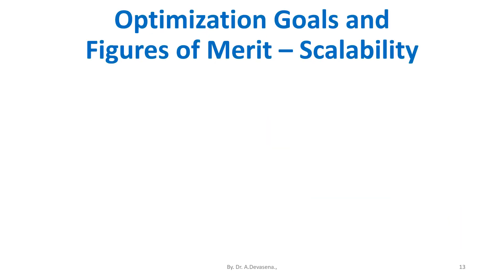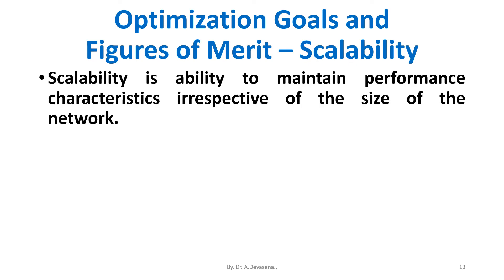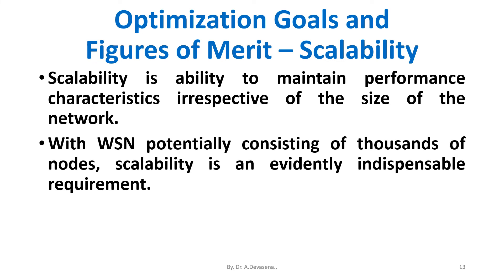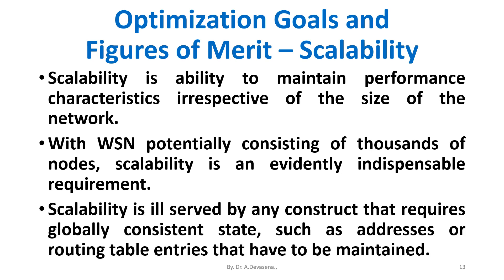Now we are going to discuss the third goal: scalability. Scalability is the ability to maintain performance characteristics irrespective of the size of the network. With wireless sensor networks potentially consisting of thousands of nodes, scalability is evidently an indispensable requirement. Scalability is well served by any construct that requires globally consistent state, such as address or routing table entries that have to be maintained.